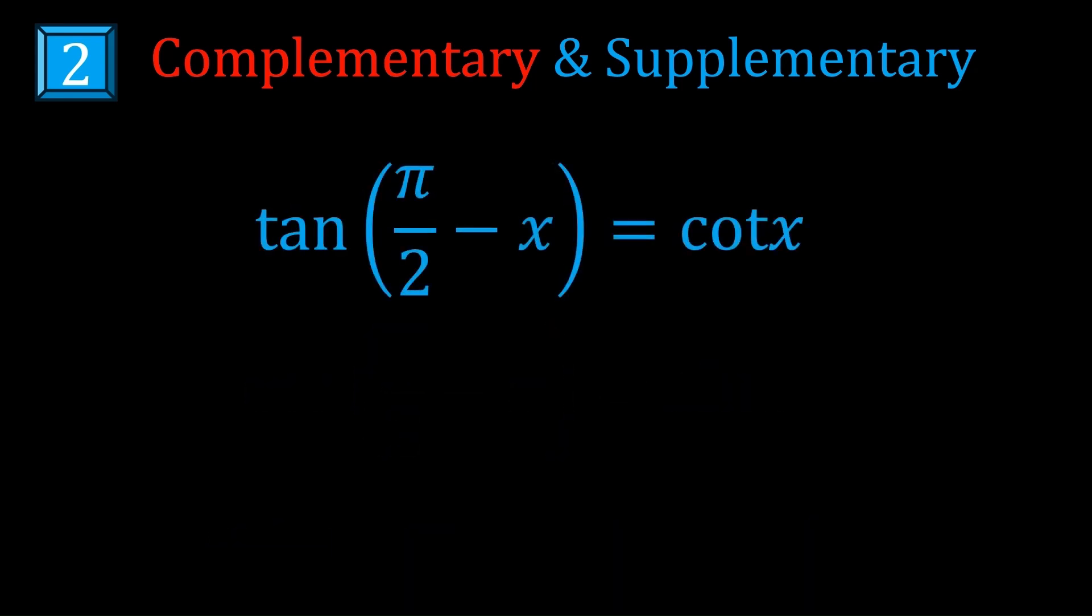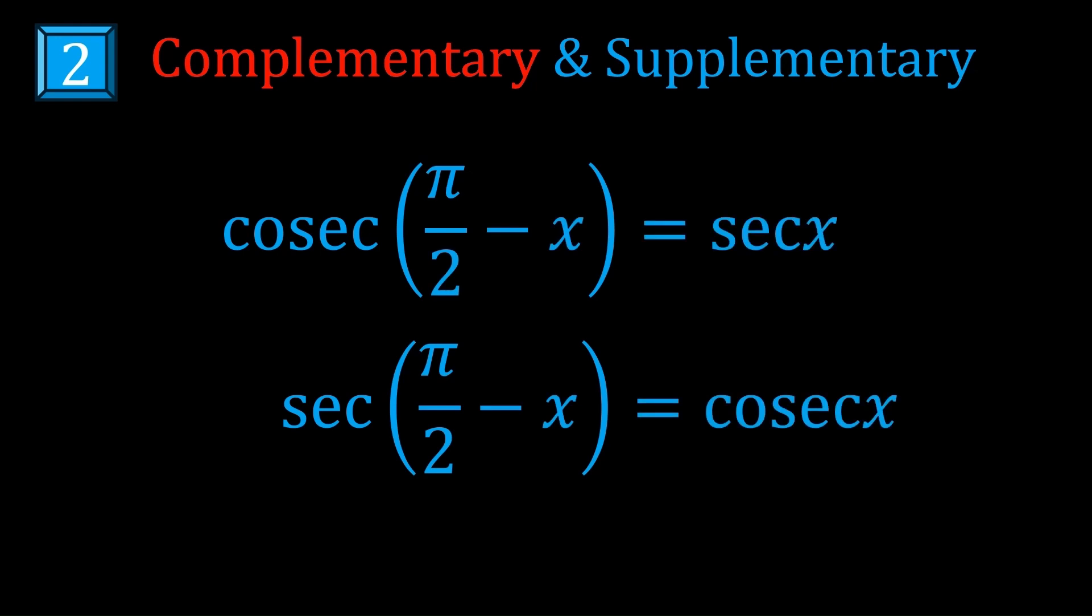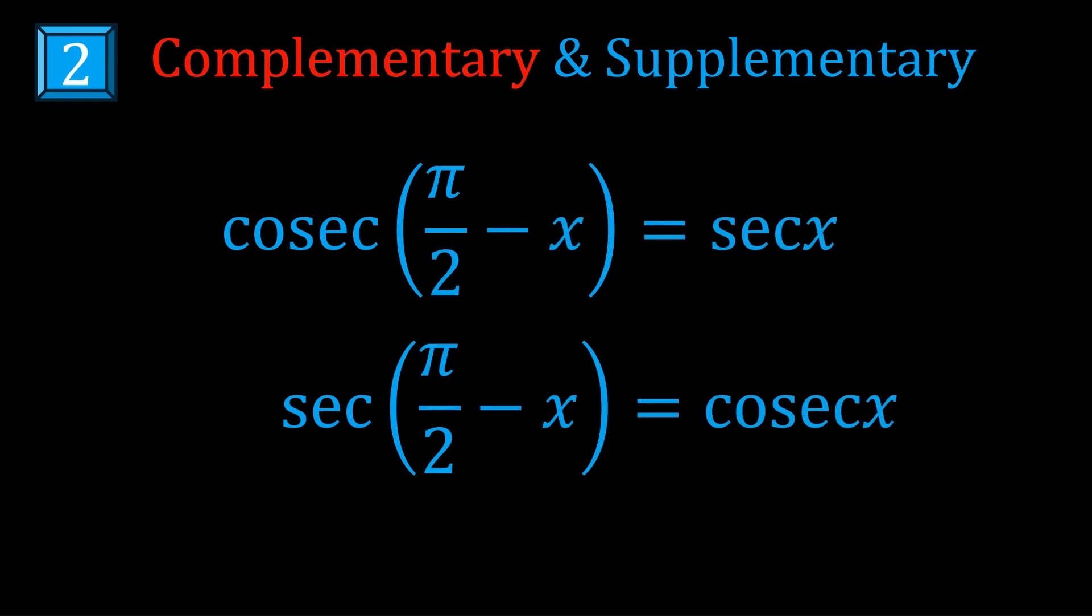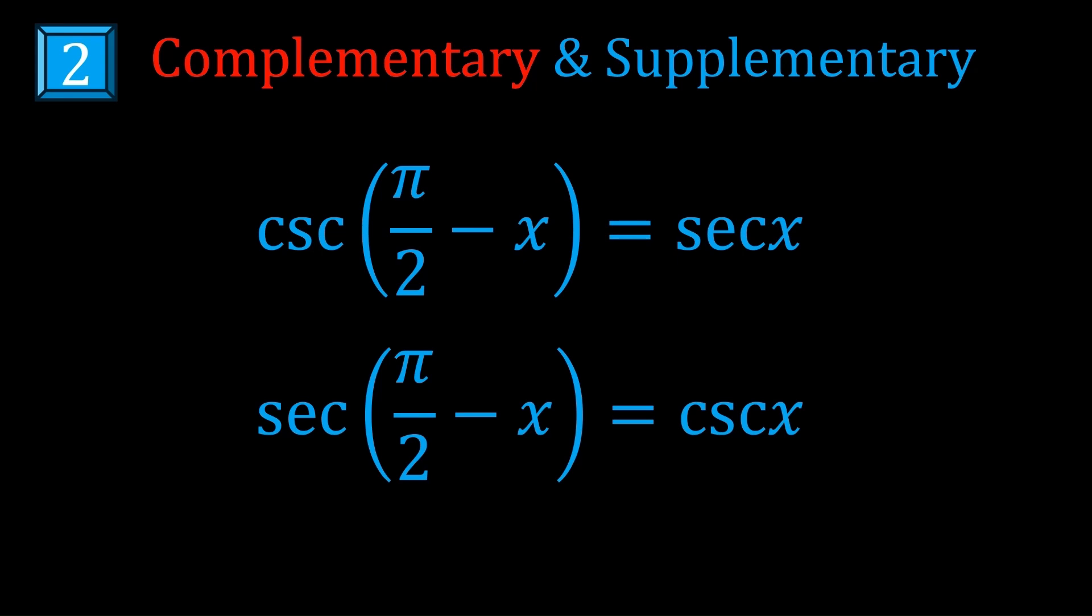In fact, it even works for cot and tan, because cot is just cotan, or complementary tan. And then, of course, it has to work for cosec and sec, since cosec is just complementary sec. By the way, we usually use csc for cosec, probably to keep it at 3 letters like every other trig function.